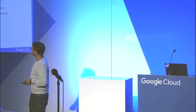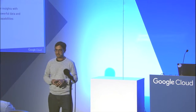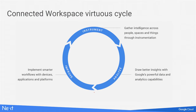This is our Connected Workspaces virtuous cycle. It starts with instrumenting your business with devices and spaces, bringing data in. The second thing is drawing better insights out of that data. And the third is making changes — either via people looking at the data, or via machines making those changes automatically. This is really the opportunity we have.